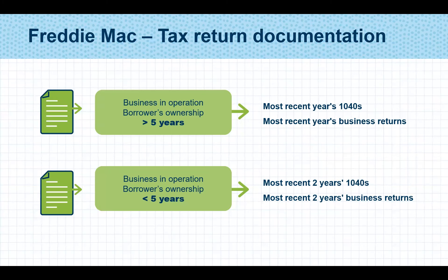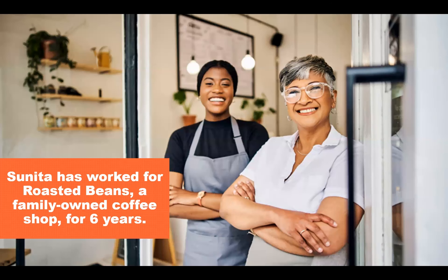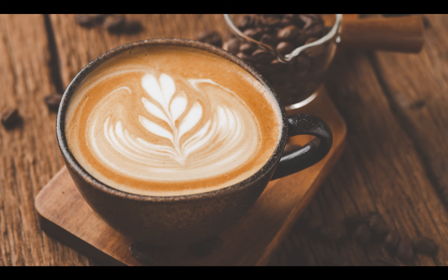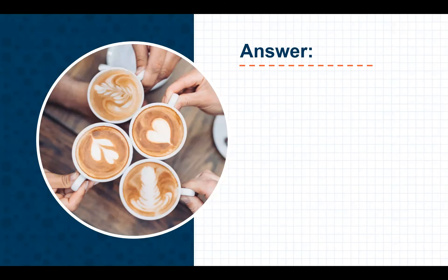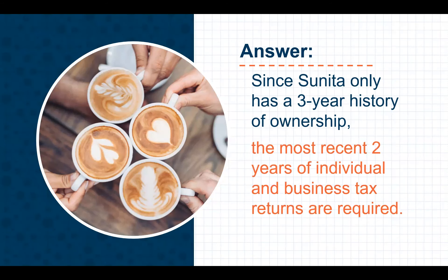Let's take a look at a scenario regarding this concept. Scenario number one involves a borrower who recently received an ownership interest from a family-owned business. Sunita has worked for Roasted Beans, a family-owned coffee shop, for six years. She received a 25% ownership interest in the business three years ago. With a Loan Product Advisor approval, since Sunita only has a three-year history of ownership in the business, the most recent two years of individual and business tax returns are required.